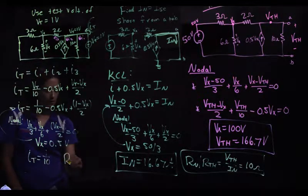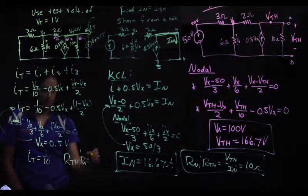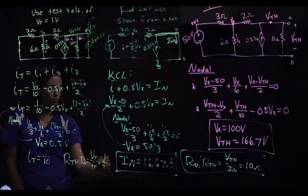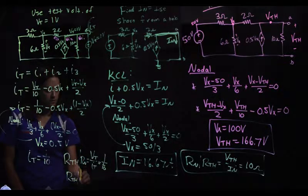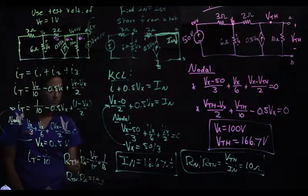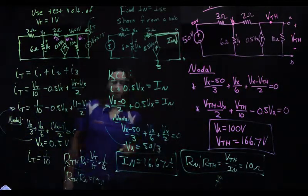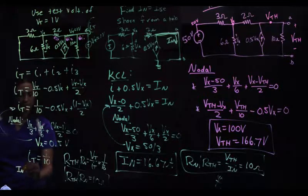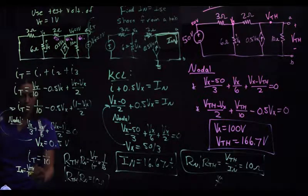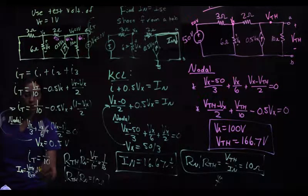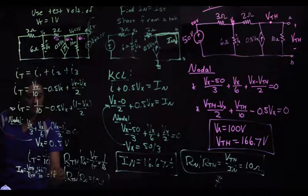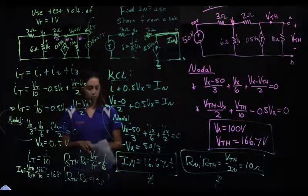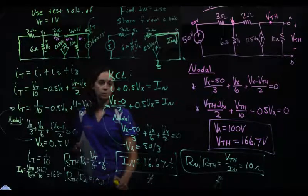So now, I have R-Thevenin slash R-Norton is equal to VT over IT, or 1 over 1 tenth. R-Thevenin slash R-Norton is 10 ohms. And that is the exact same thing we got over here. If we look at our I-Norton, we're going to have I-Norton will be V-Thevenin over R-Thevenin, or 166.7 over 10, I-Norton is 16.67. So, two different ways to do the same problem, you do which way is more comfortable for you, and this will conclude chapter 4. Thank you.